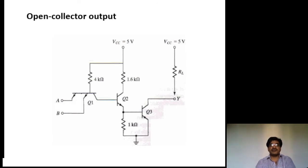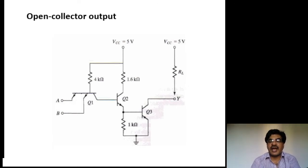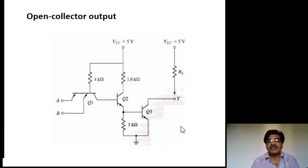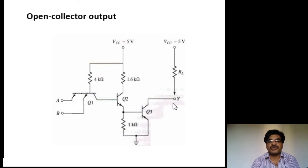This circuit acts as a two-input NAND gate. If you observe the final transistor Q3, its collector is in open mode. That is why it is called open collector output.